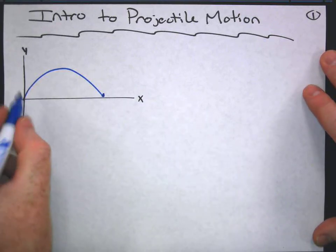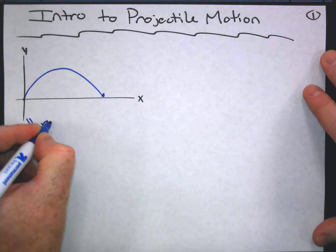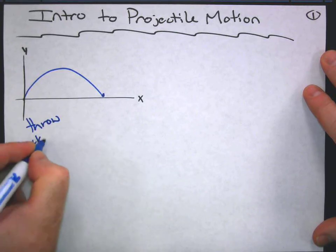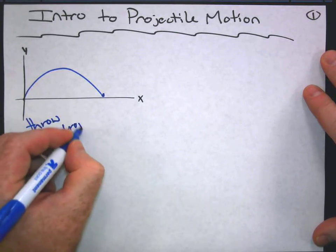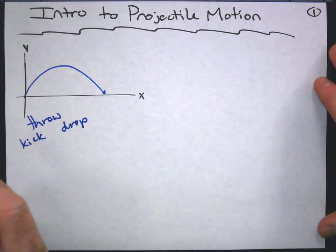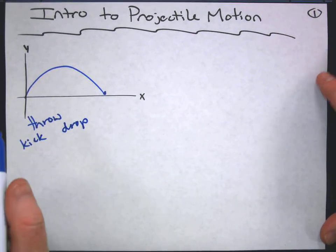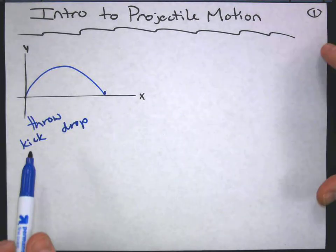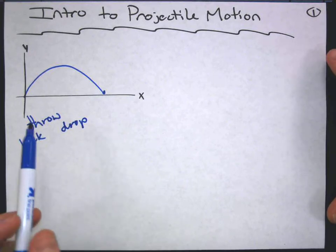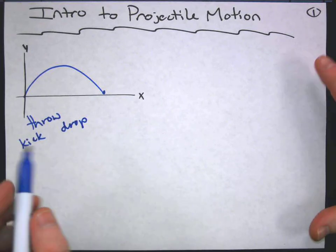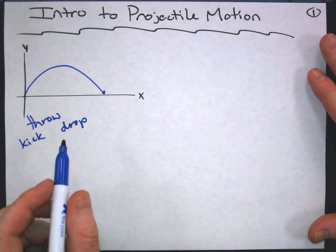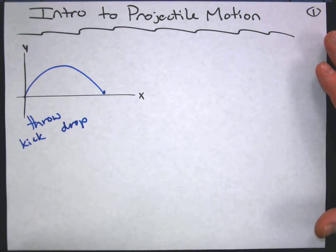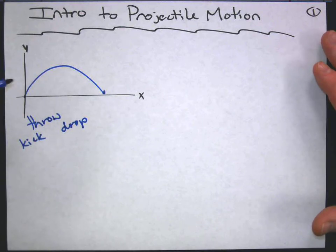So how does it get this motion? Well, you could throw it, you could kick it, you could drop it, you could roll it off the edge of a cliff or off a countertop — just about any means of creating the motion is fine. There's motion in two dimensions happening simultaneously, and the motion in the X and the Y directions are independent of each other.